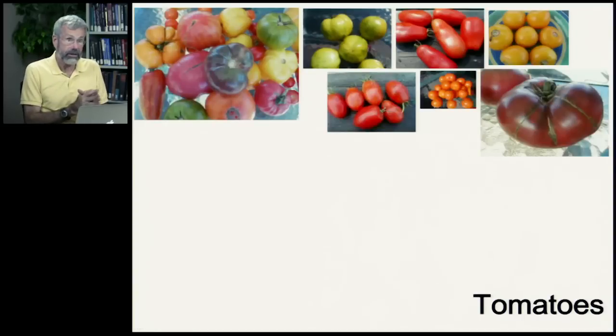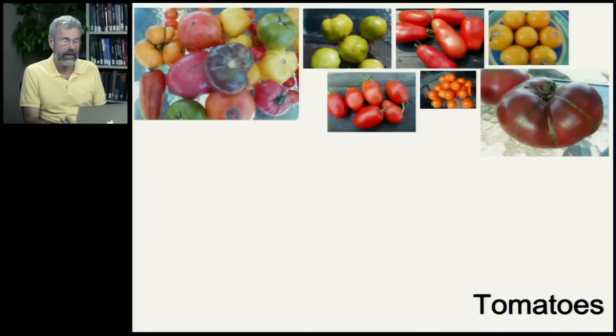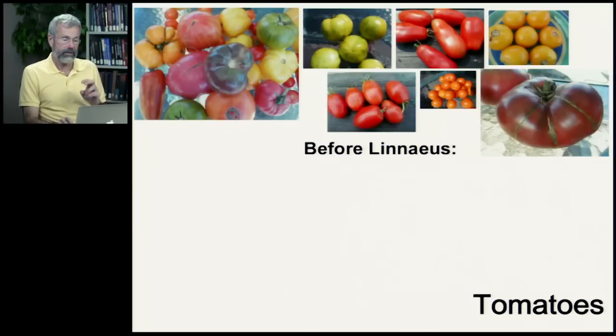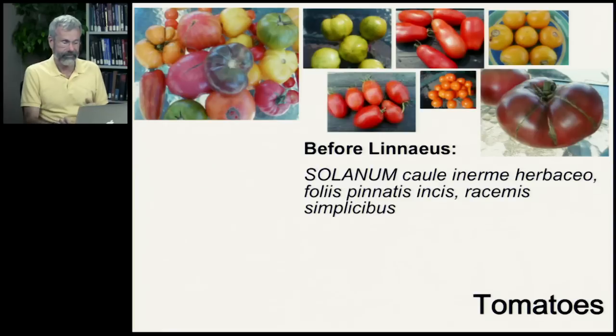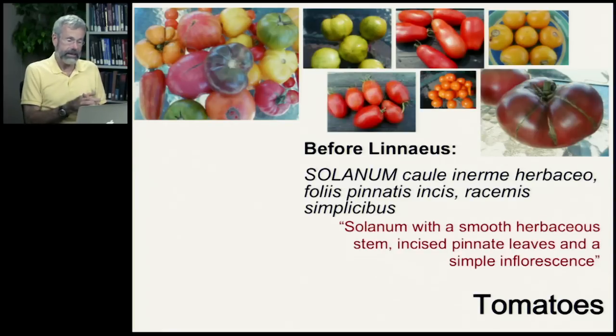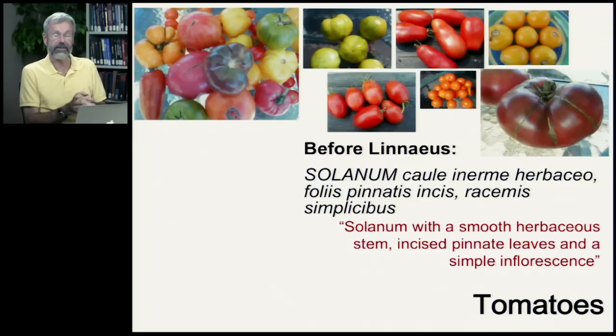Prior to Linnaeus, the proper scientific names for organisms were really clumsy. Here's a bunch of tomatoes — they're all the same species, just different varieties. Before Linnaeus, the proper scientific name for this plant was Solanum caule inerme herbaceo, foliis pinnatis incisis, racemis simplicibus — which is like a long sentence describing it. Translated, that means Solanum with a smooth herbaceous stem, incised pinnate leaves, and a simple inflorescence.